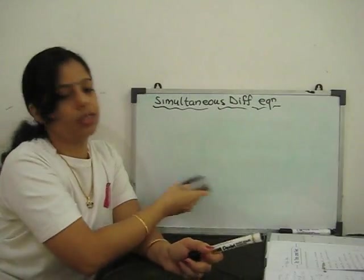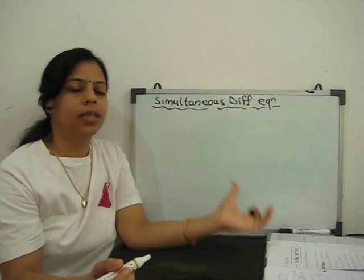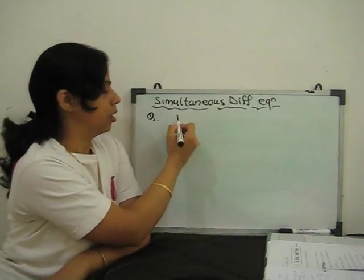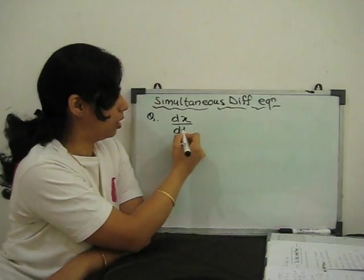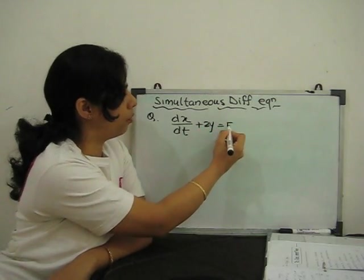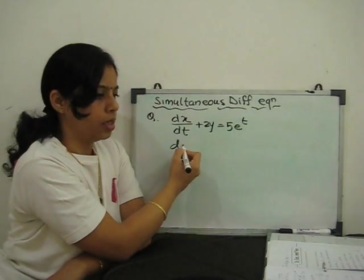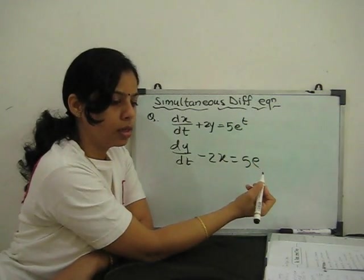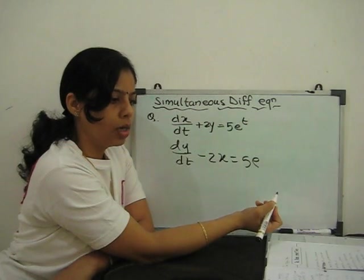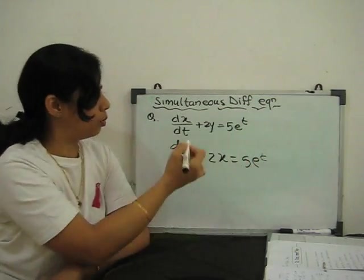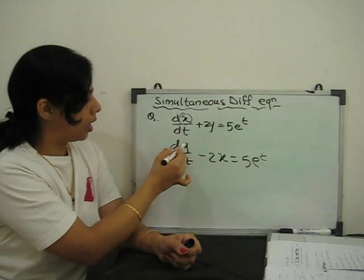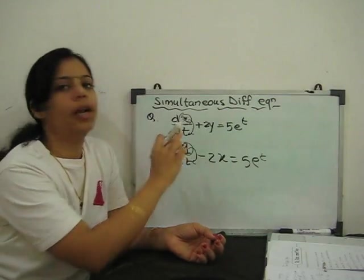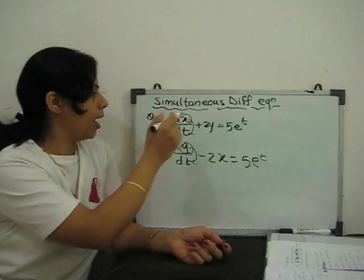We will discuss this simultaneous equation with one example. Our example is: dx/dt + 2y = 5e^t, and the second equation is dy/dt − 2x = 5e^t. The right-hand side is the same for both. Here x and y depend on t — x and y are the two dependent variables, and t is the independent variable.